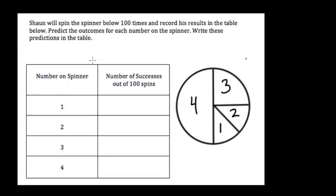Here we have a part two question from the New York State test, dealing with a circle graph and a frequency table. The question says that Sean will spin the spinner below a hundred times — so we can look at percentages — and record his results in the table. We need to predict the outcomes for each number on the spinner and write those predictions in the table.